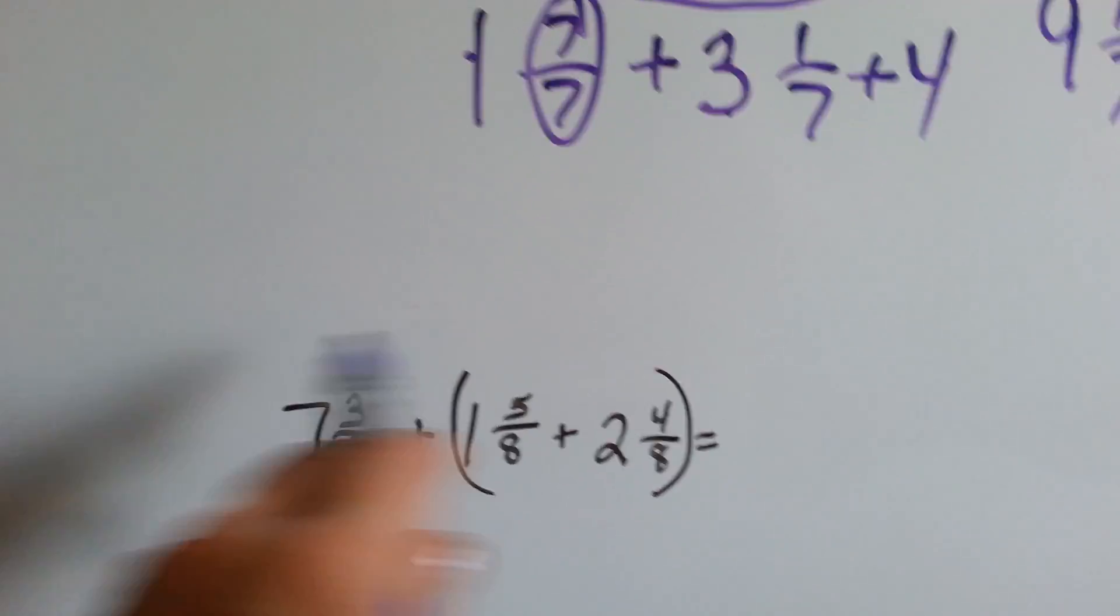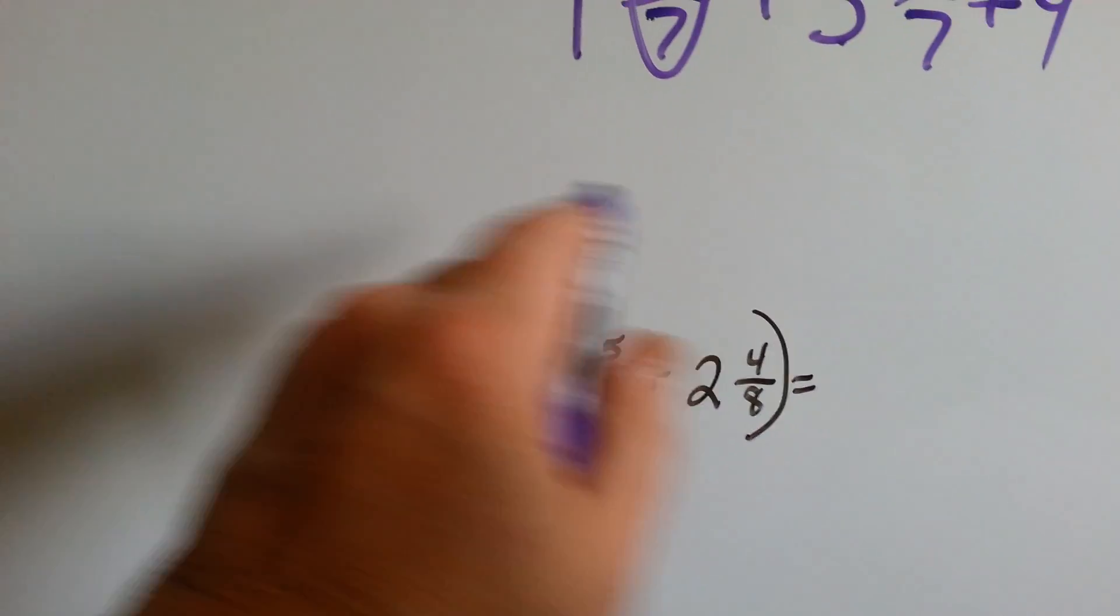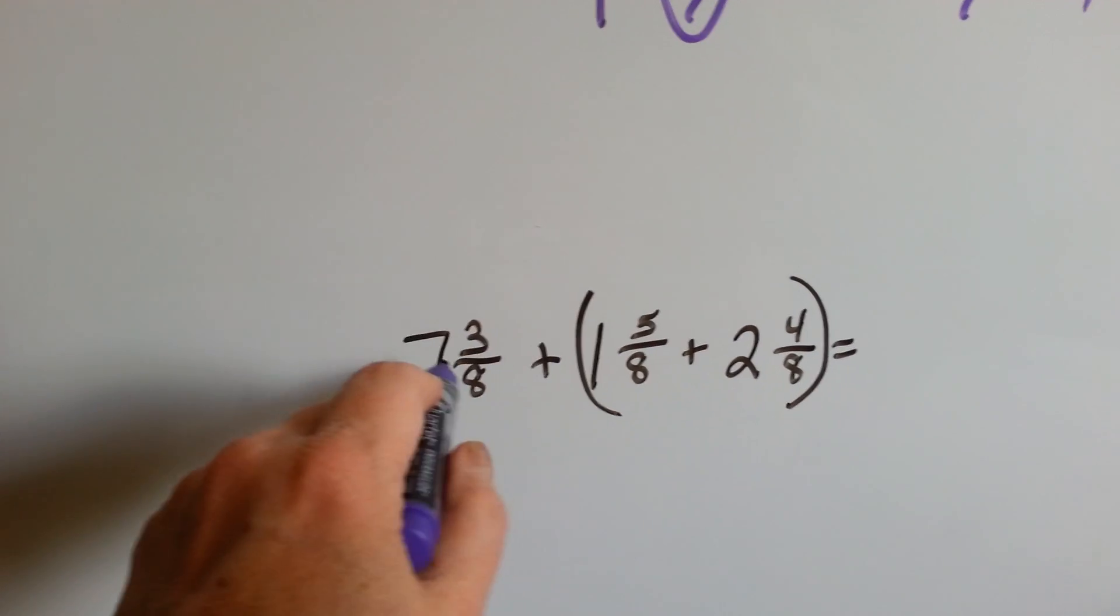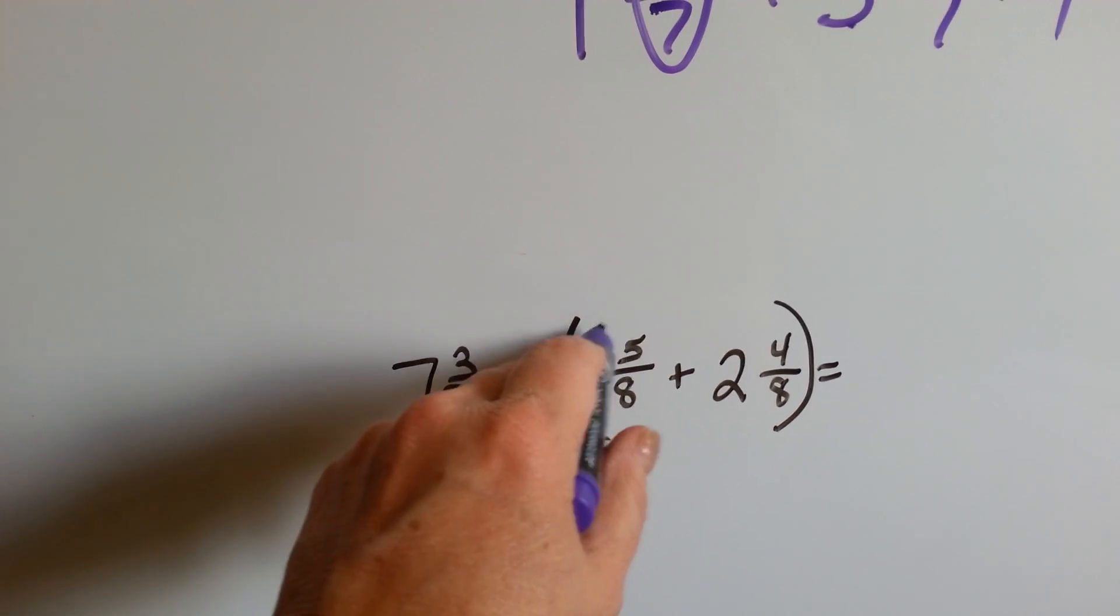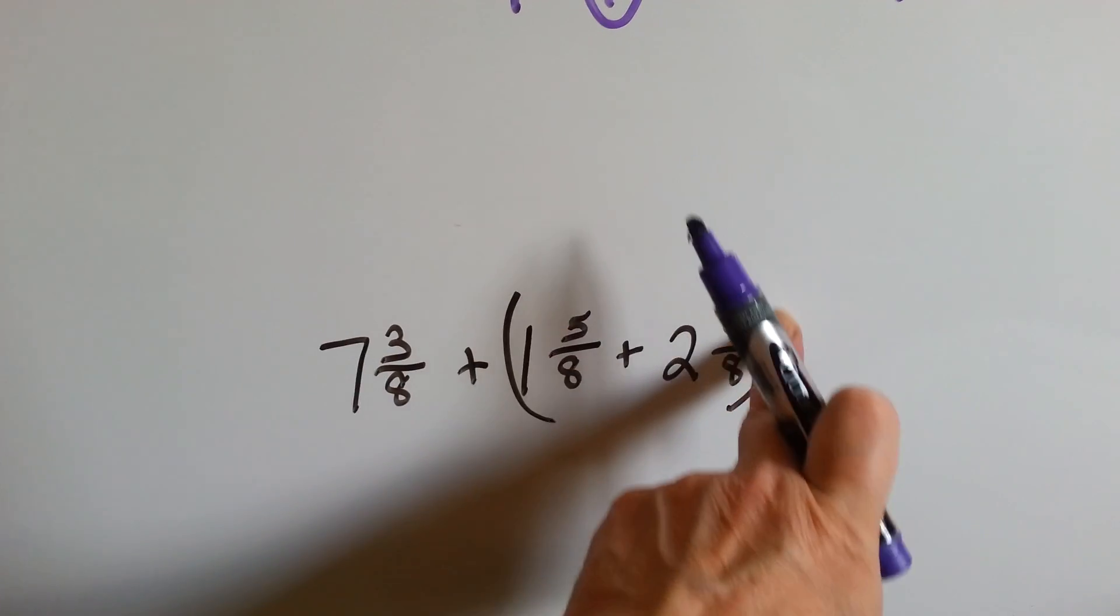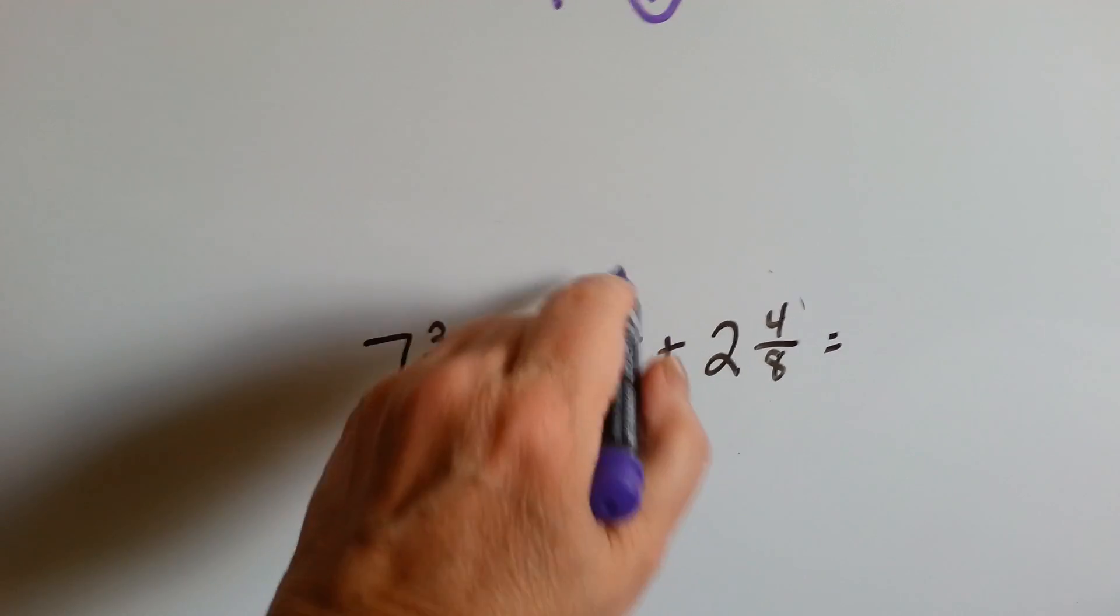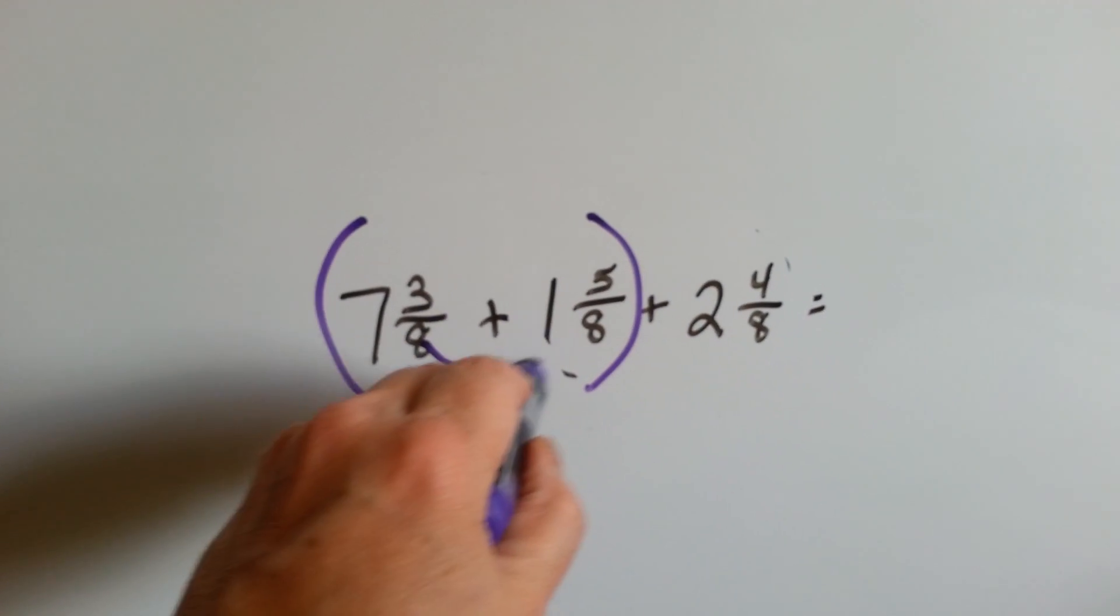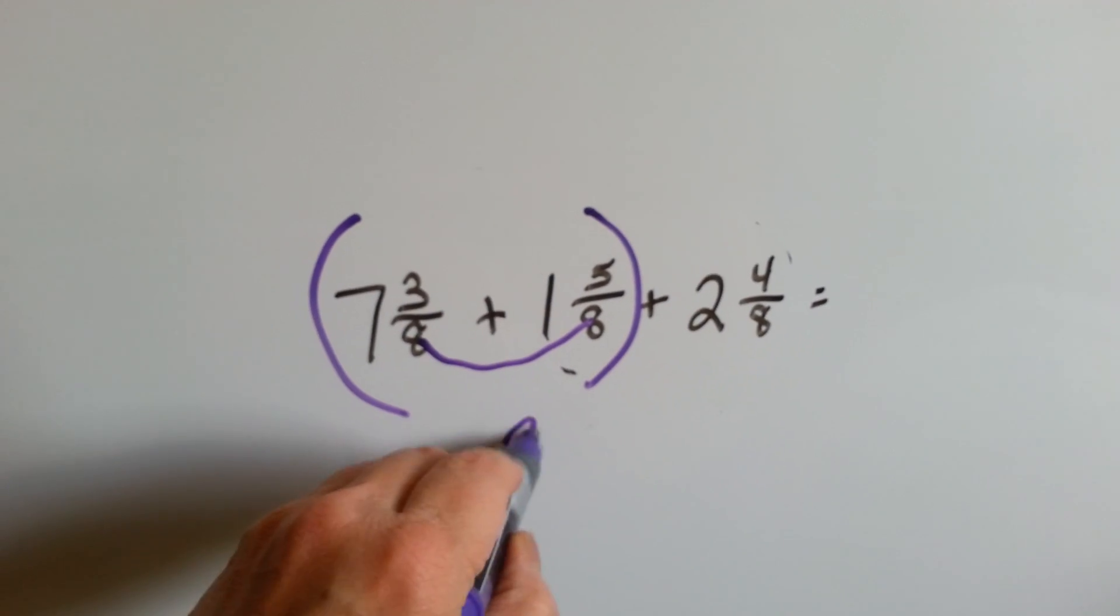So it doesn't matter what order we add these in. Add them in the order that's going to be the easiest for your head. Look at this one. 7 and 3 eighths plus 1 and 5 eighths plus 2 and 4 eighths. Wouldn't it be better if the parentheses were this way? Because then we could make this one whole of 8 eighths?